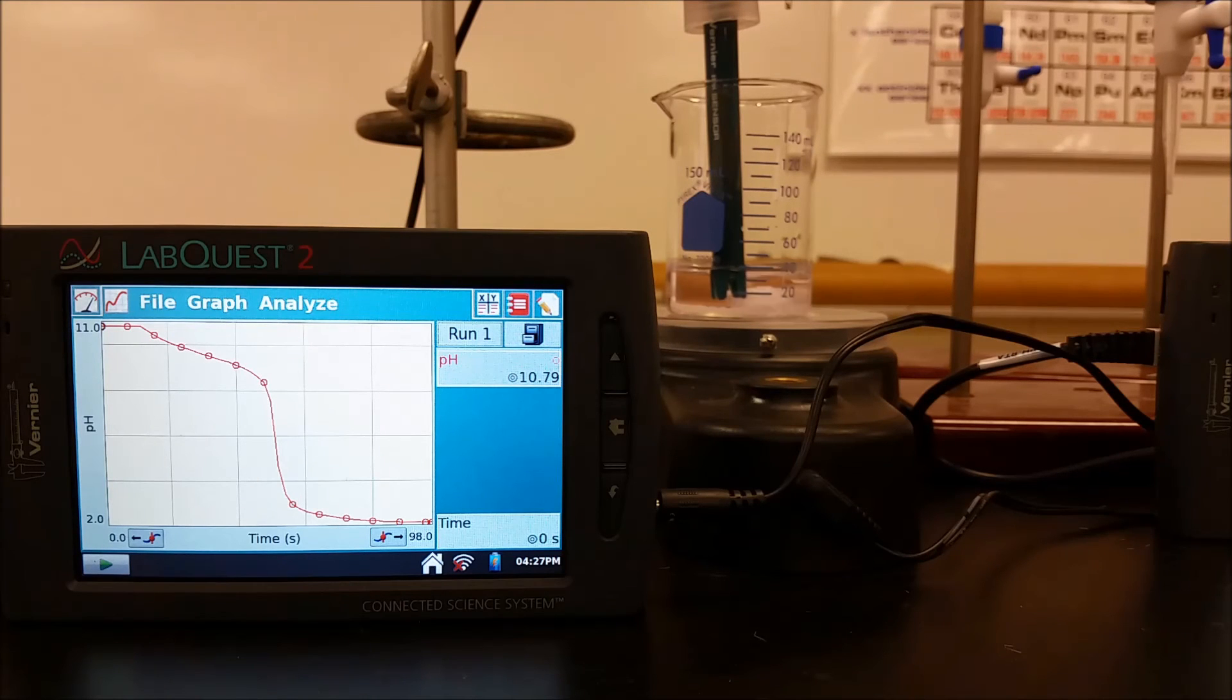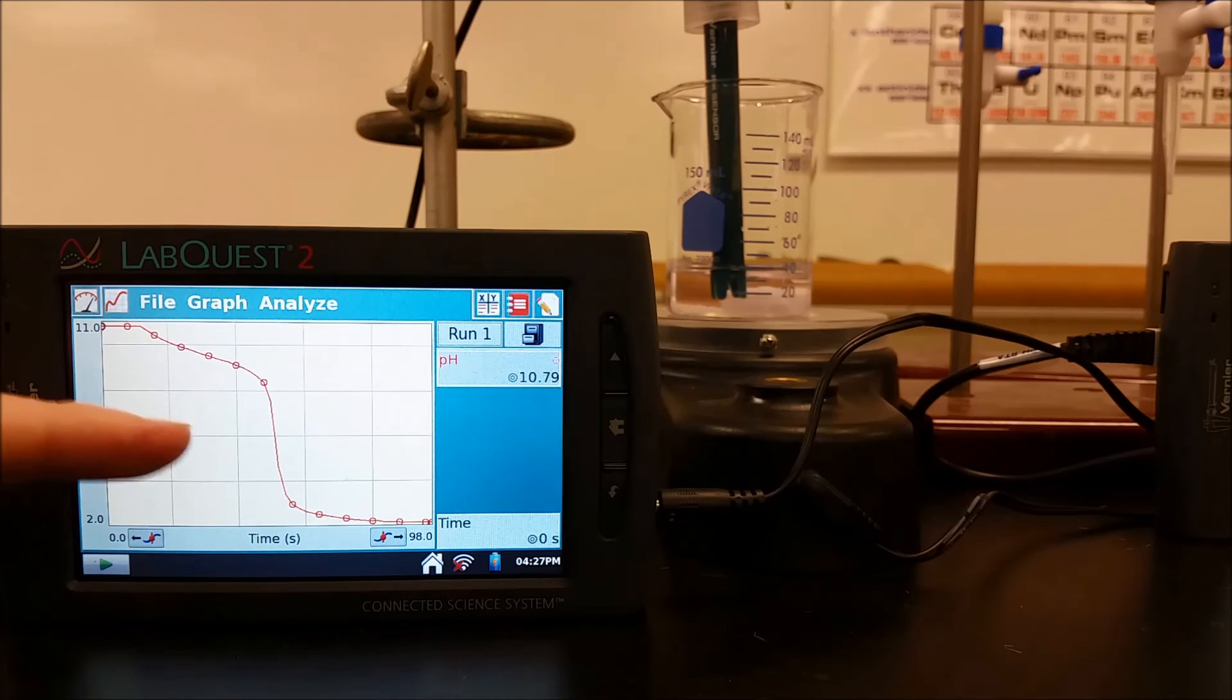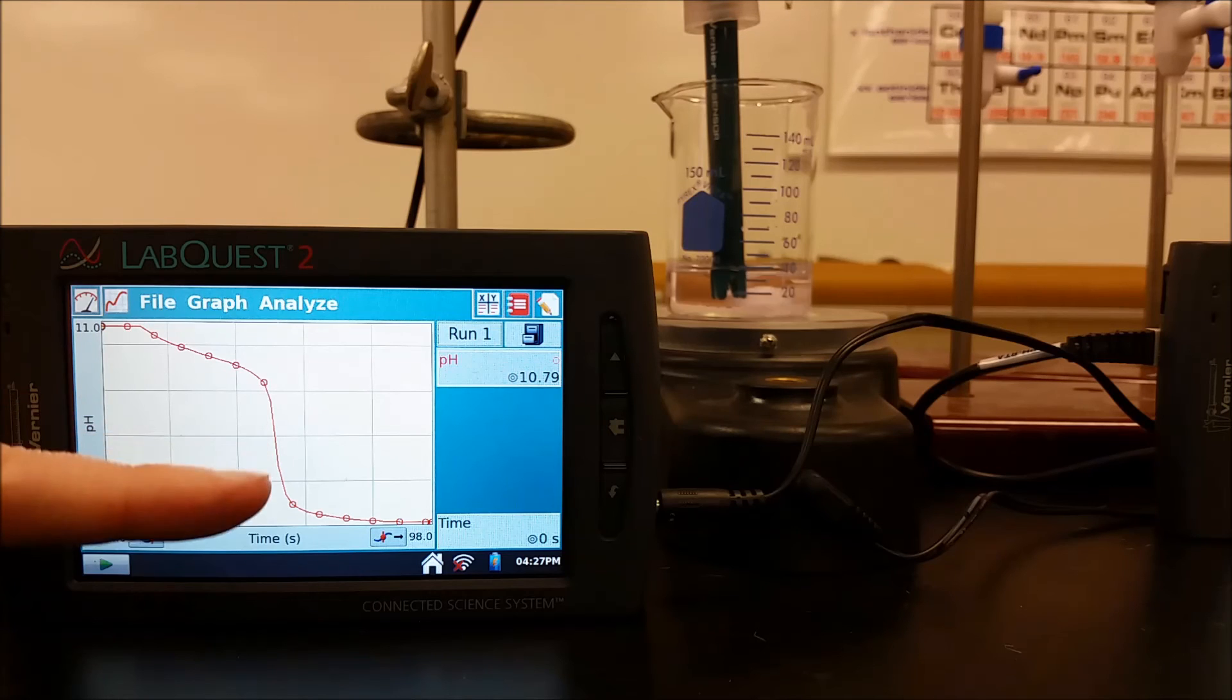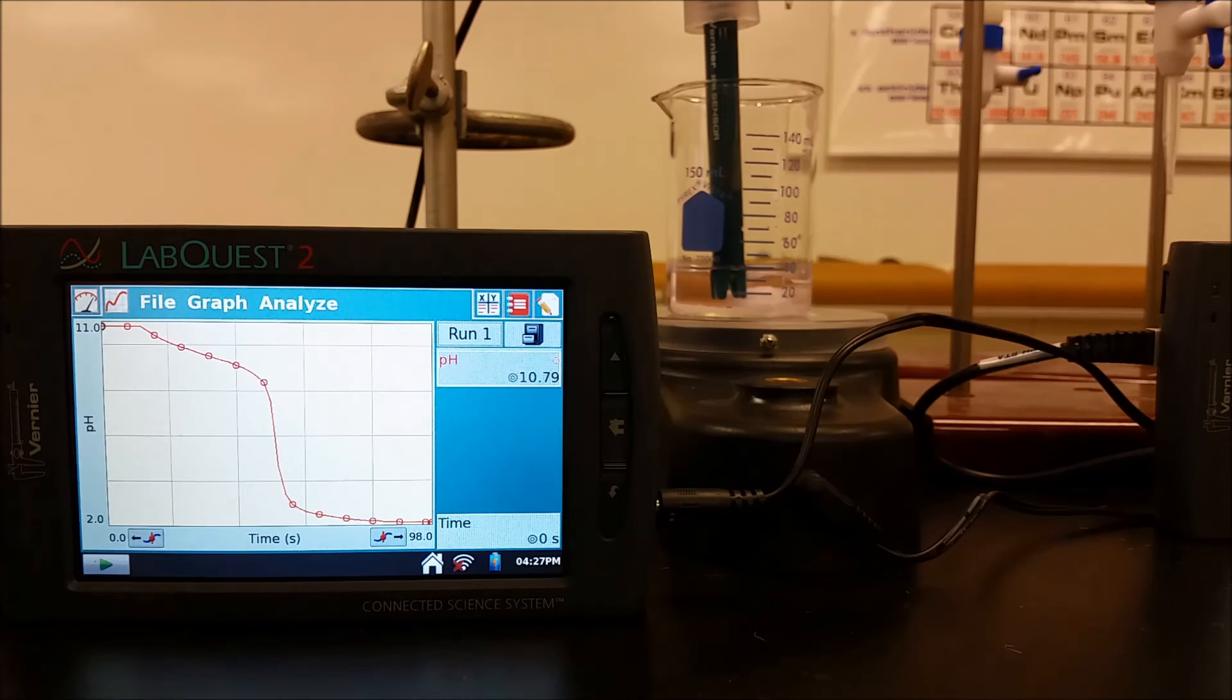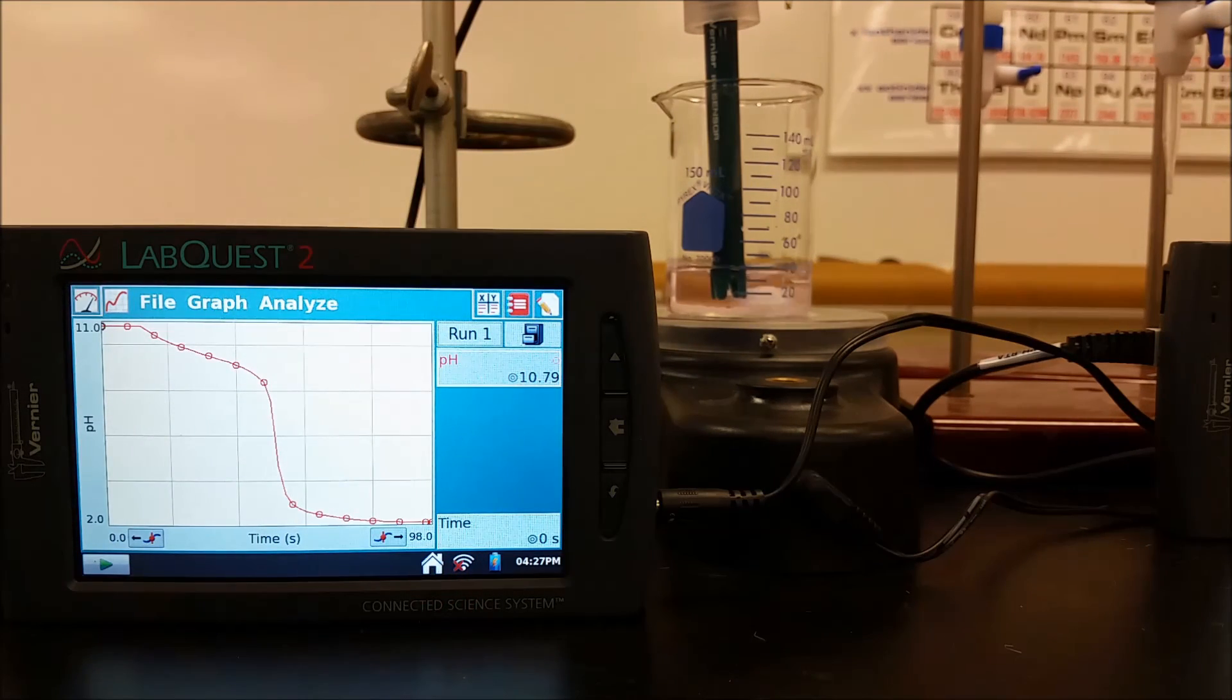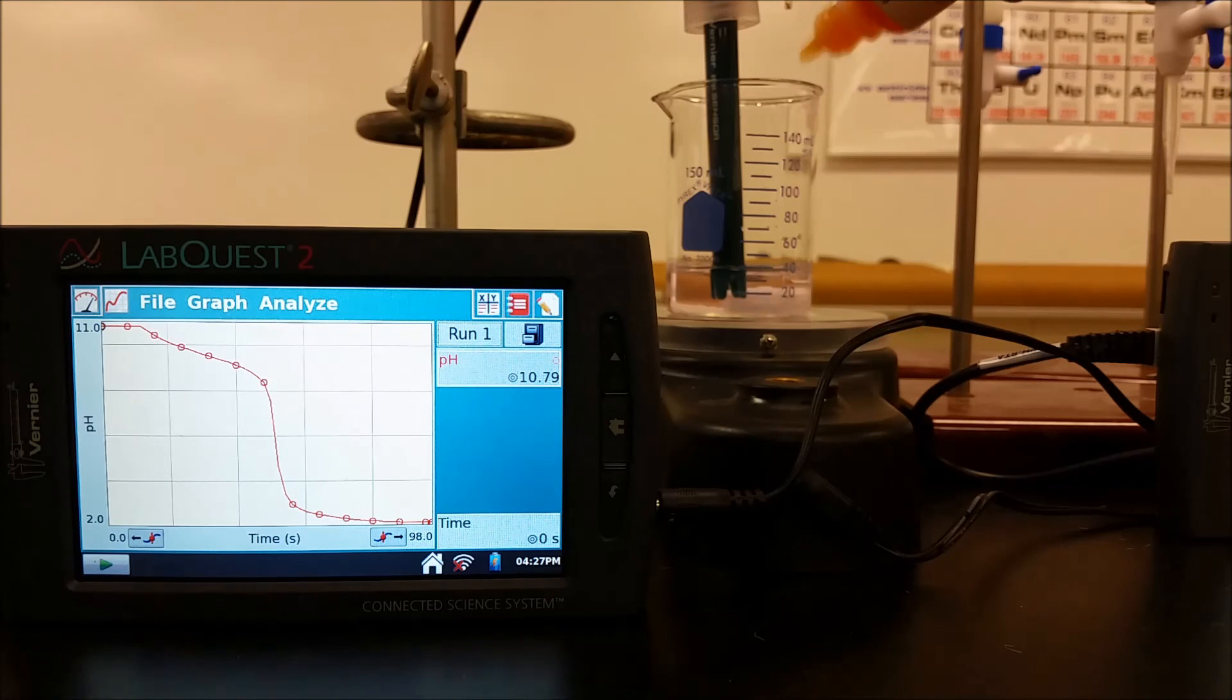We're going to run one more titration, but this time we're going to make sure that we do not end up where our endpoint and equivalence point are far off from each other. We want our endpoint to be at the equivalence point, not well before it. So this time we're going to use a different indicator with the same titration as we ran in the third set. Here we're going to be using the methyl red with our weak base ammonia. So I'm going to add that and that's going to turn yellow.